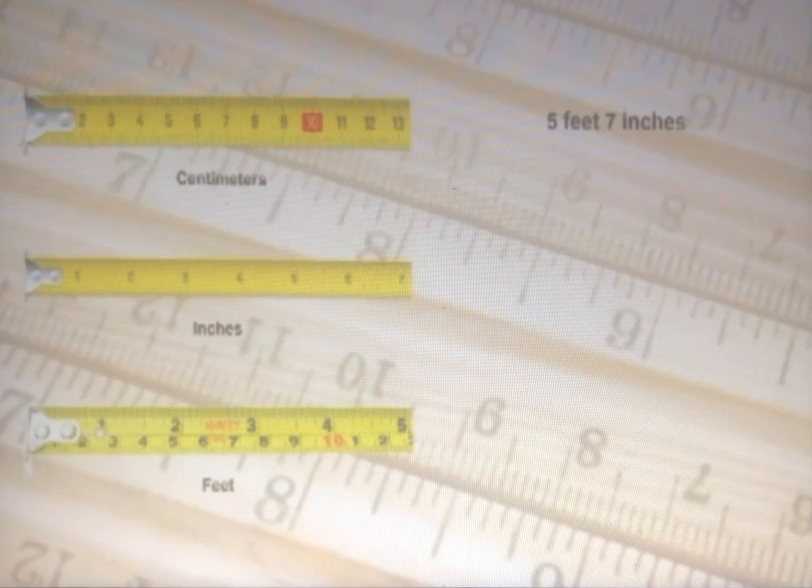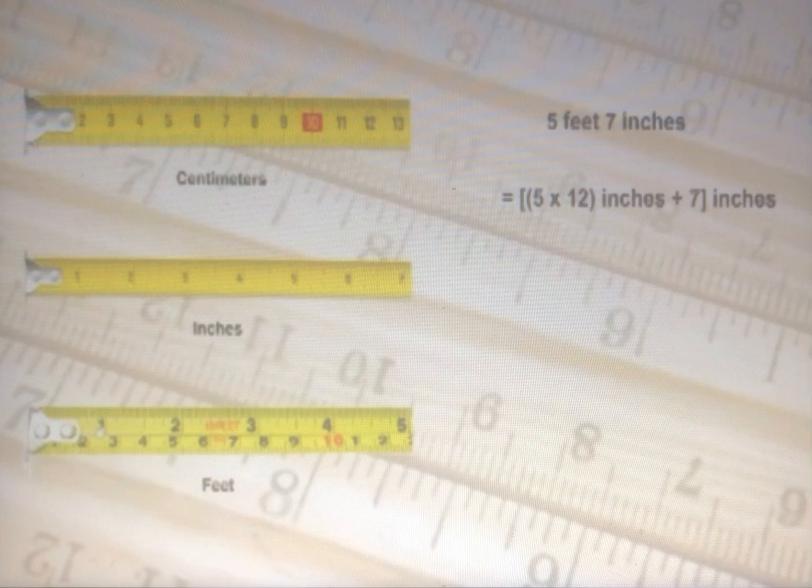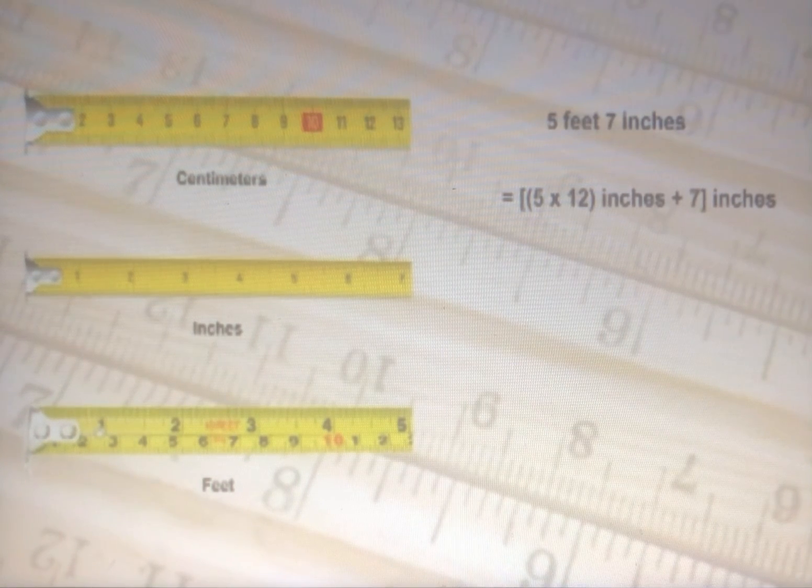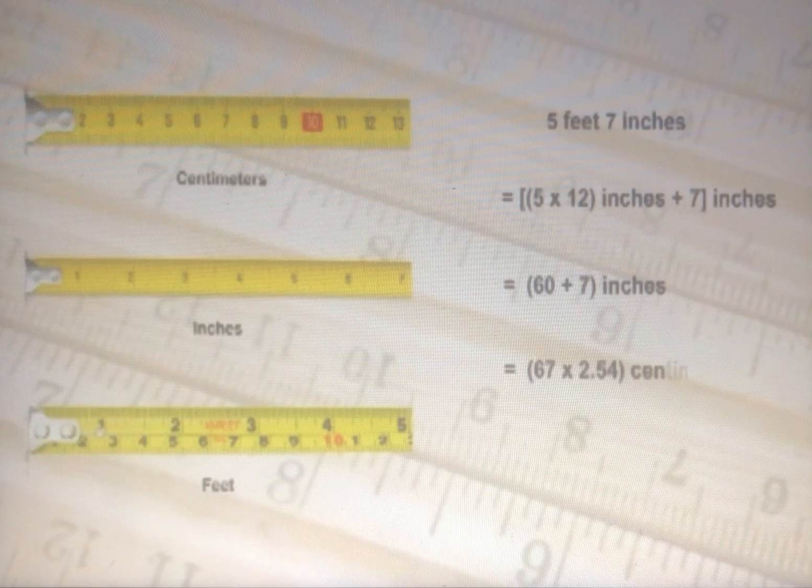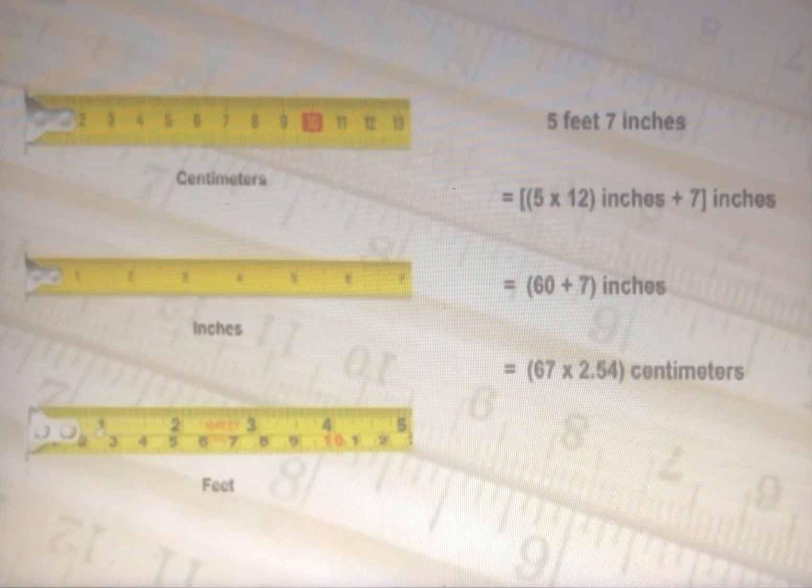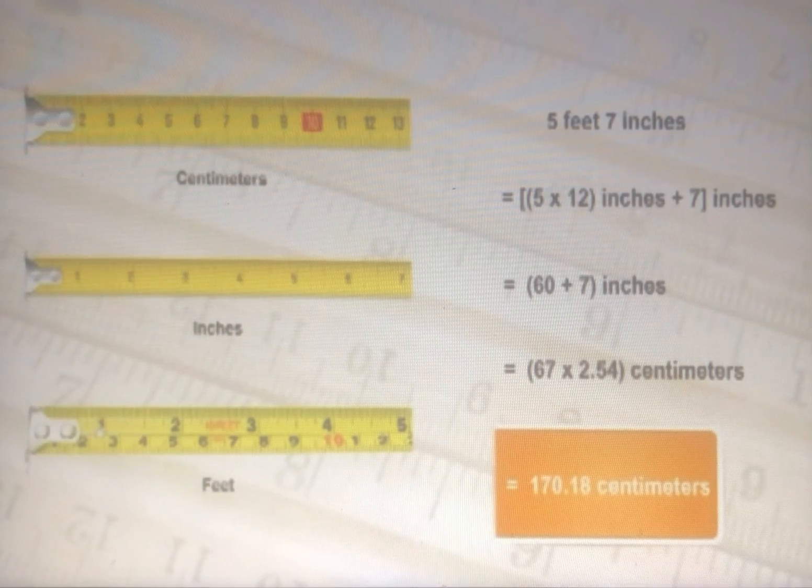For example, for an input of 5 feet and 7 inches, the program calculates the total inches by multiplying the length in feet by 12, and then adding the remaining inches to this sum. It then applies the conversion formula, 1 inch equals 2.54 centimeters, to find the length in centimeters.